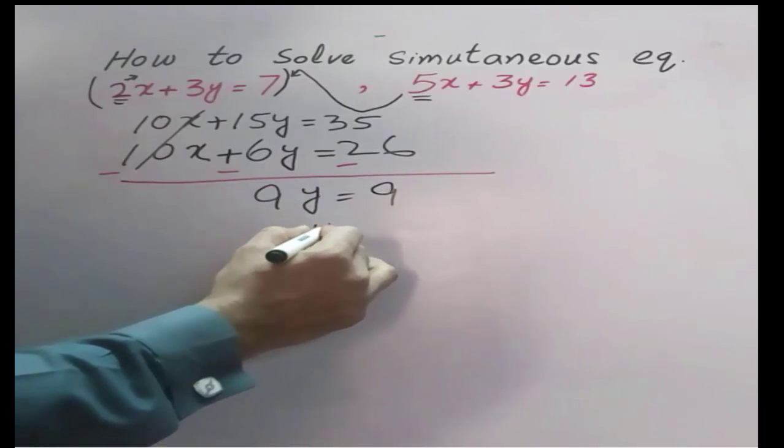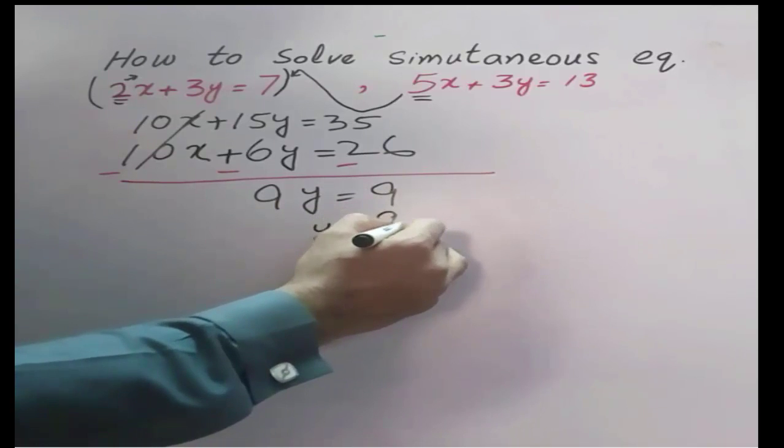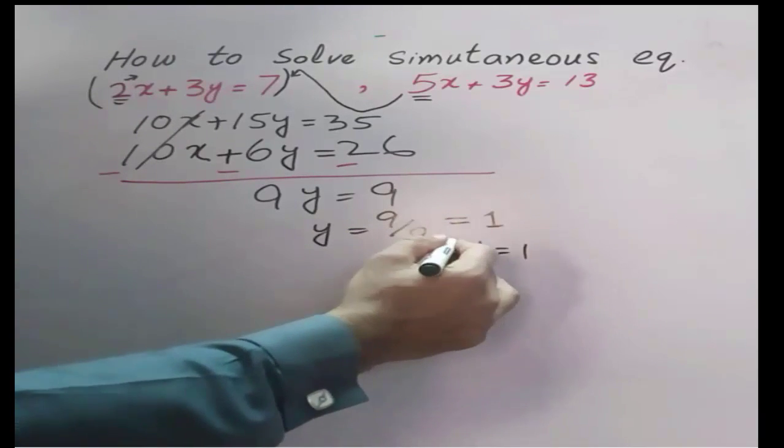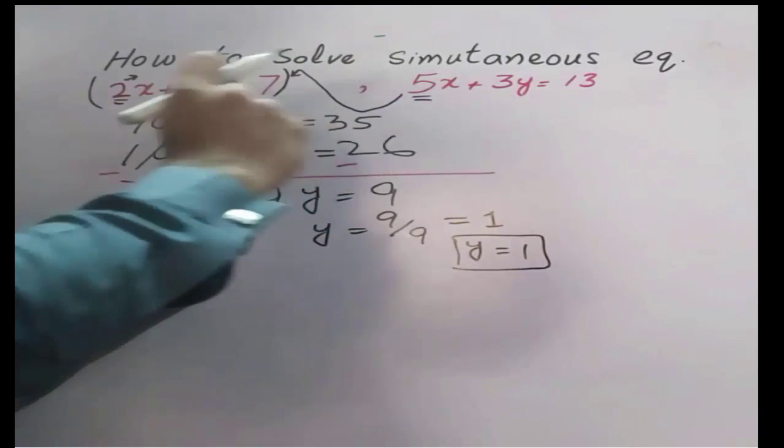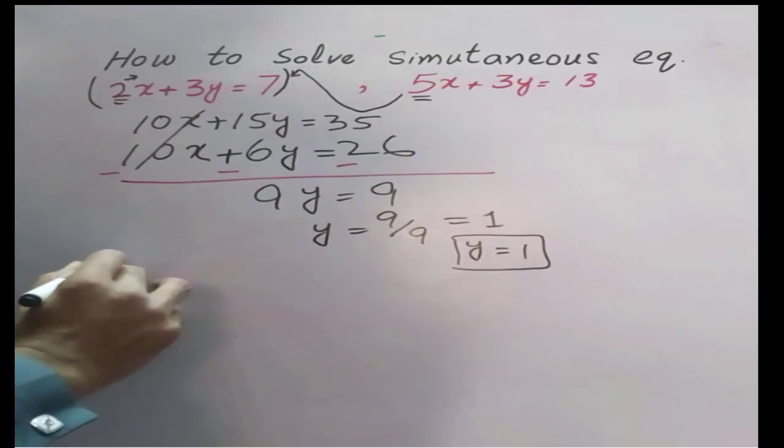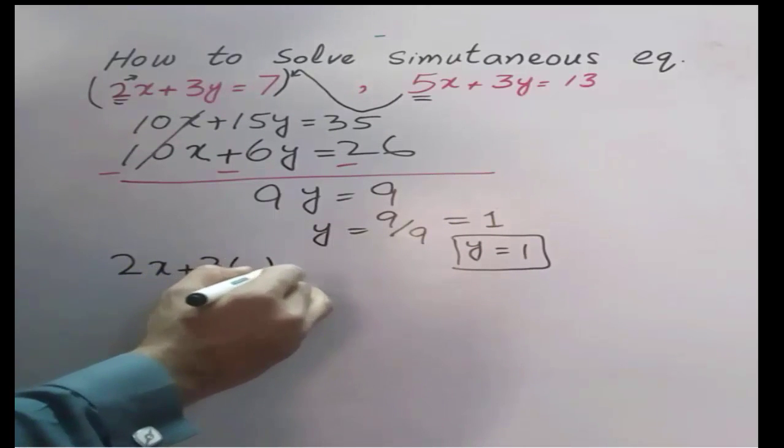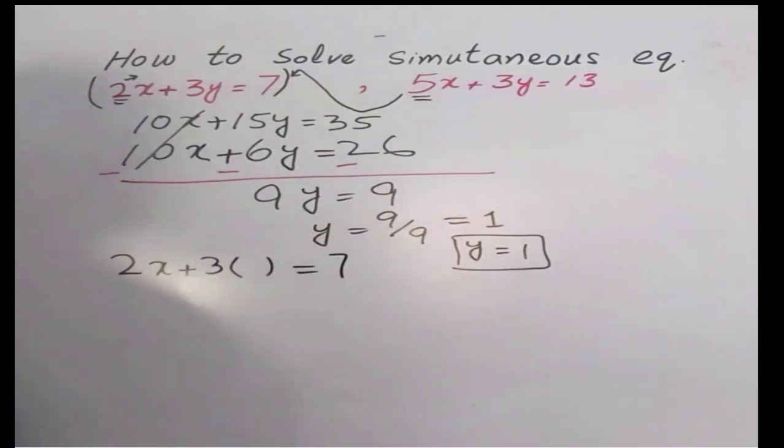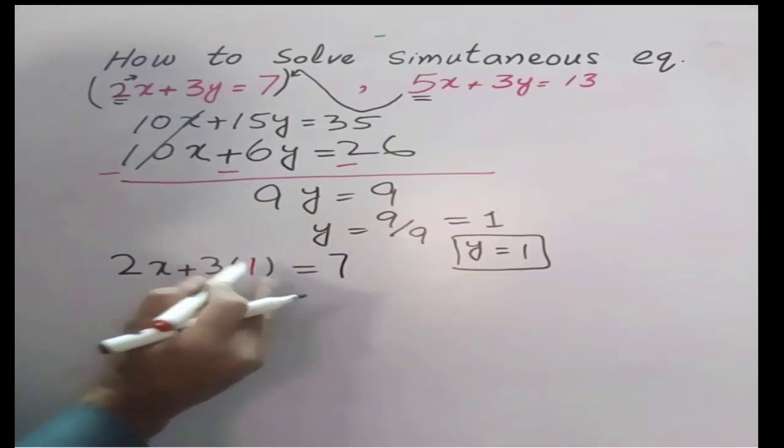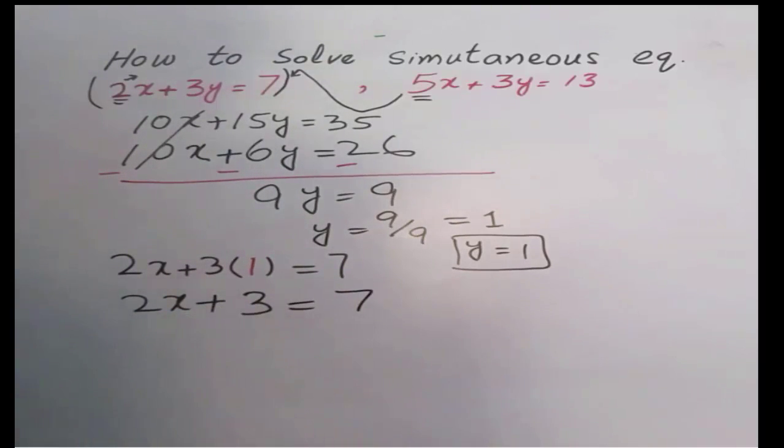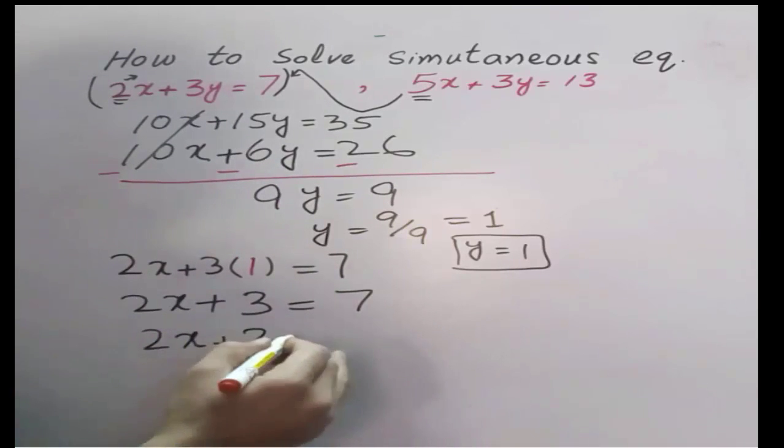So value of y is equal to 9 over 9 is 1. Now take the value of y and put in either this equation or this equation. So 2x plus 3 times 1 for the value of y. 2x plus 3 is equal to 7. 2x plus 3, subtract 3 on both sides.